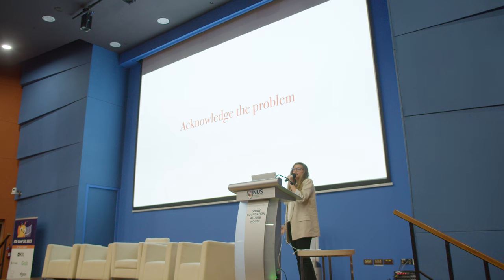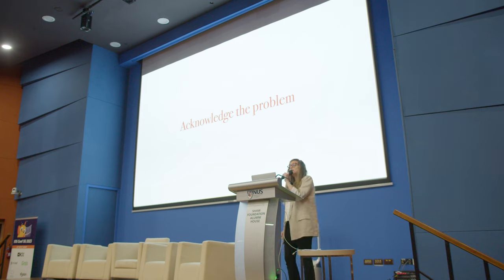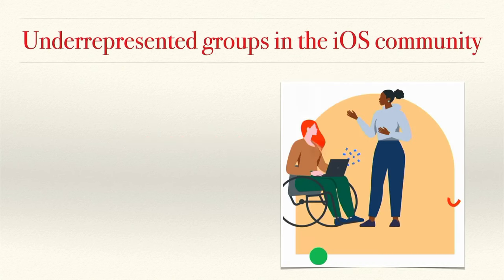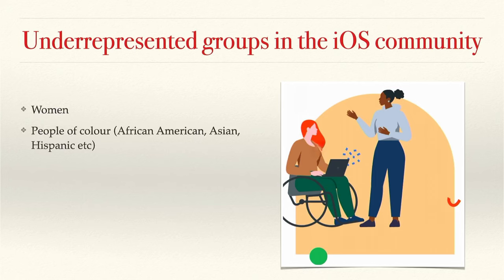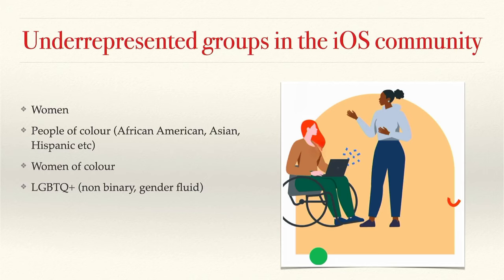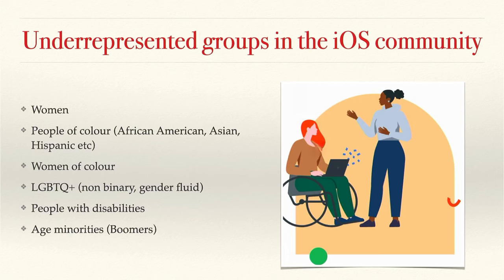Now that we've established that diversity is important, how close are we into acknowledging the problem — the lack of diversity in the community? The first step is to identify the underrepresented groups in the iOS community and software engineering in general. We have women; people of color, like African-American, Asian, and Hispanic; women of color; members of the LGBTQ+ community, like non-binary and gender fluid; people with disabilities; and people with age minorities, like baby boomers — because how many 50 or 60-year-old software engineers do you actually know?